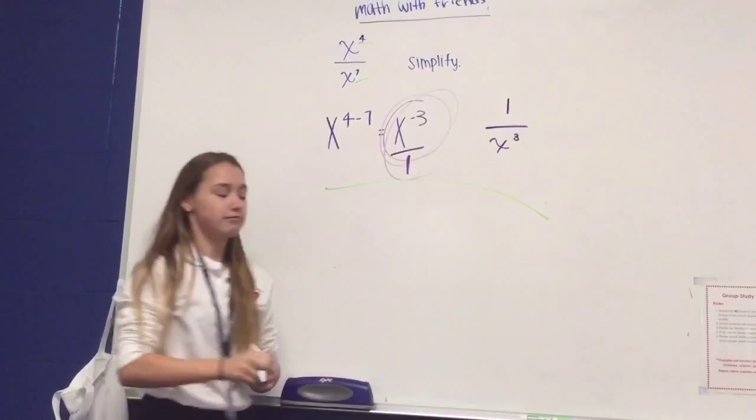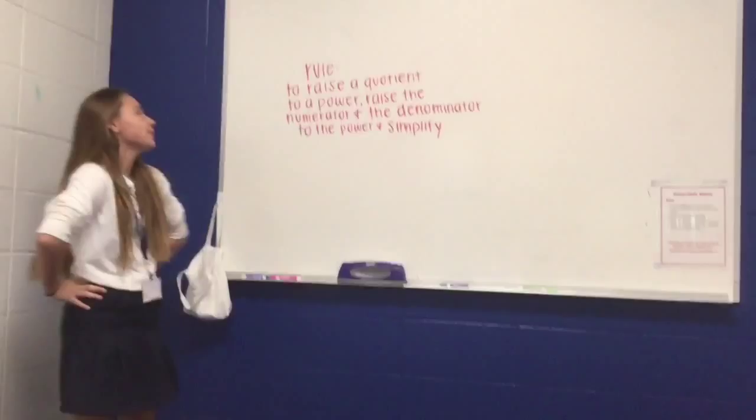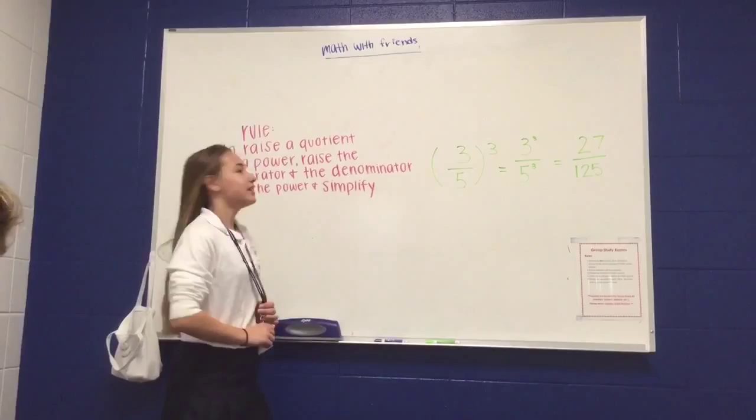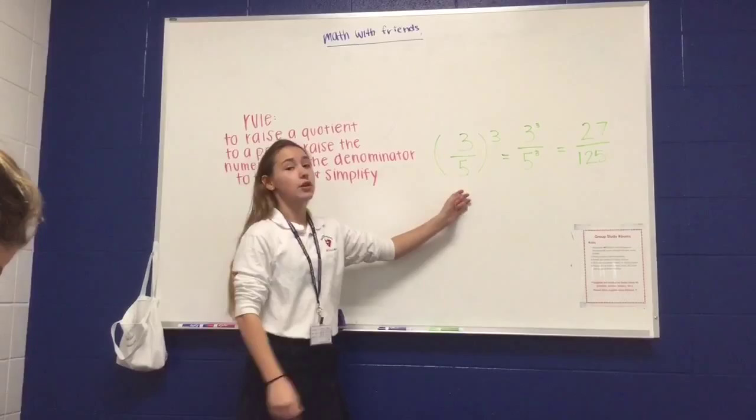For our next rule, to raise a quotient to a power, raise the numerator and the denominator to the power, and then simplify. Now, applying to this new rule, what we have is this example problem. Three over five, parentheses to the third power. How can we simplify this?